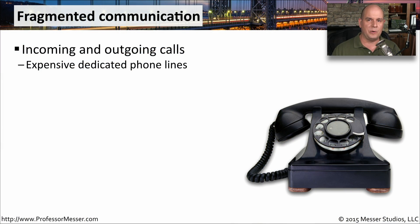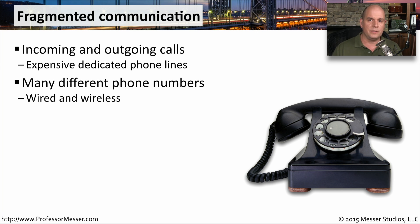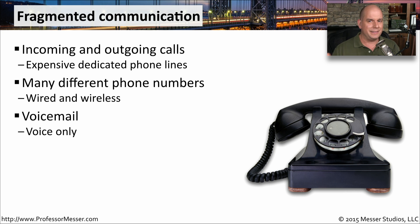As human beings, we have so many different ways to communicate. It's very common that we might have a wired telephone at work so that we're able to send and receive calls. You might also have a wired telephone at home so you can make calls when you're at home. And these days, we also have mobile devices as well — you might have a mobile phone. So there might be three phone numbers that are all associated just for calling you. There's also voicemail; if somebody doesn't get you on the phone, then you'll have voicemails to listen to after the fact.